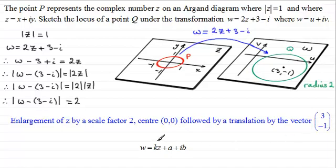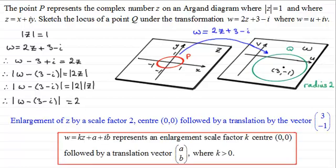So in general, this particular transformation, what does it do? Well, w equals kz plus a plus ib represents an enlargement scale factor k, centre the origin, followed by a translation vector (a, b) where k is a positive value. Okay, well I hope that's given you some idea then how this particular transformation works.